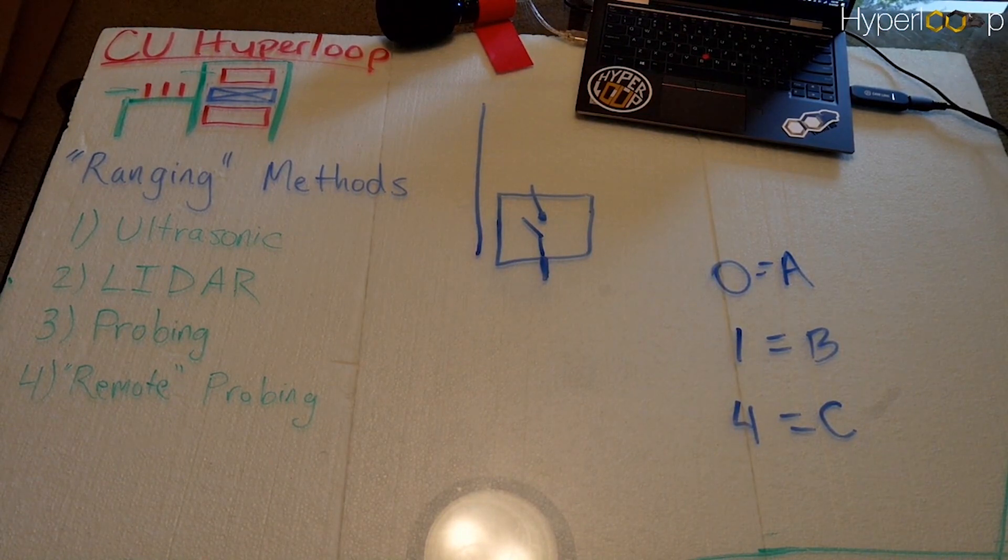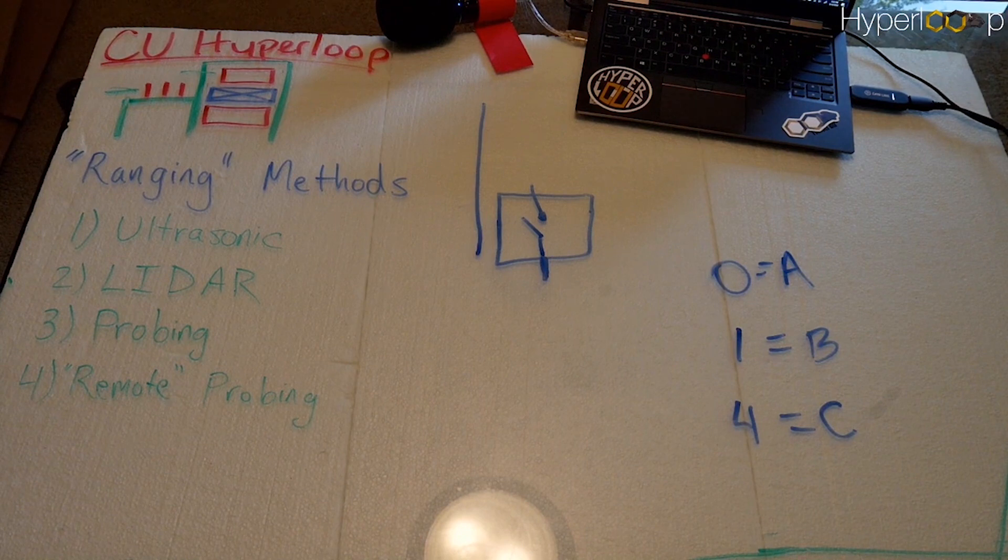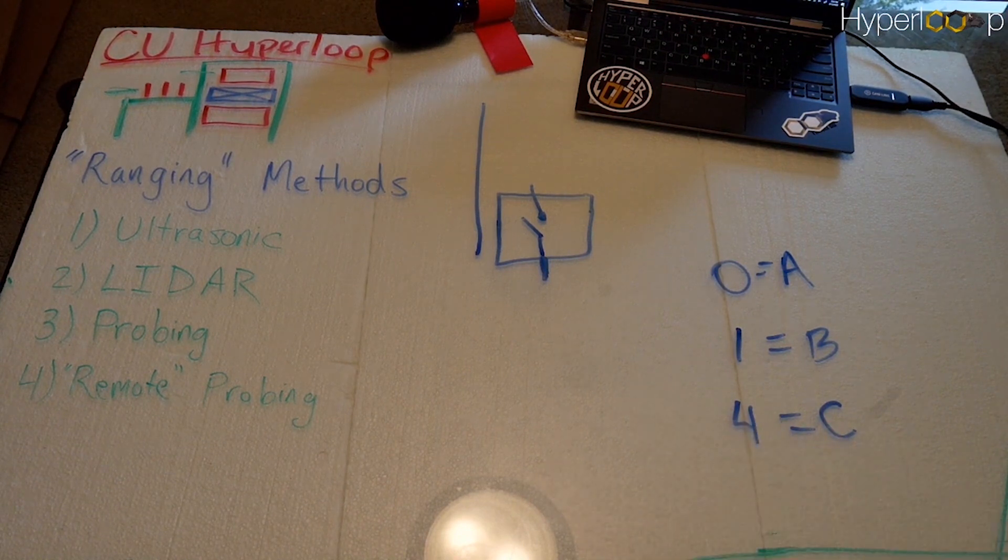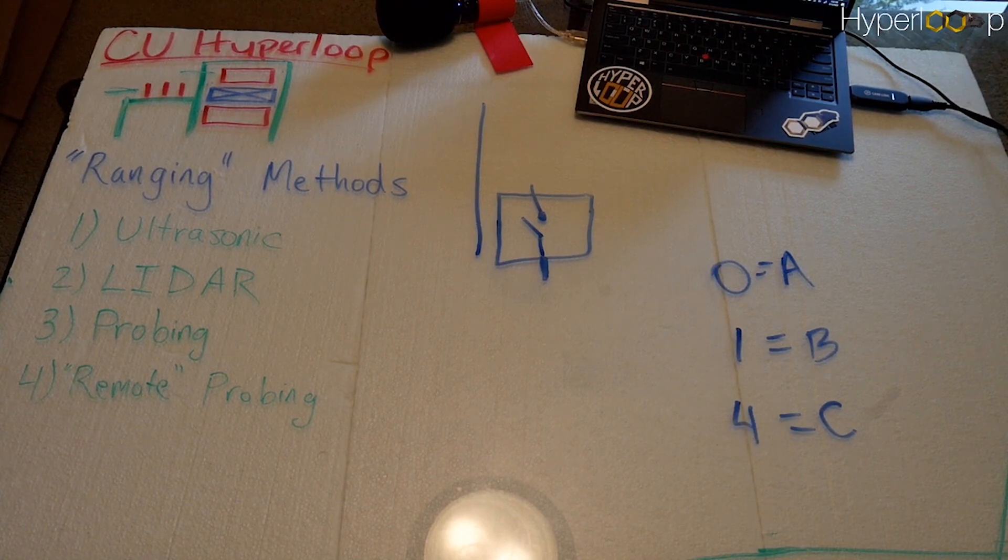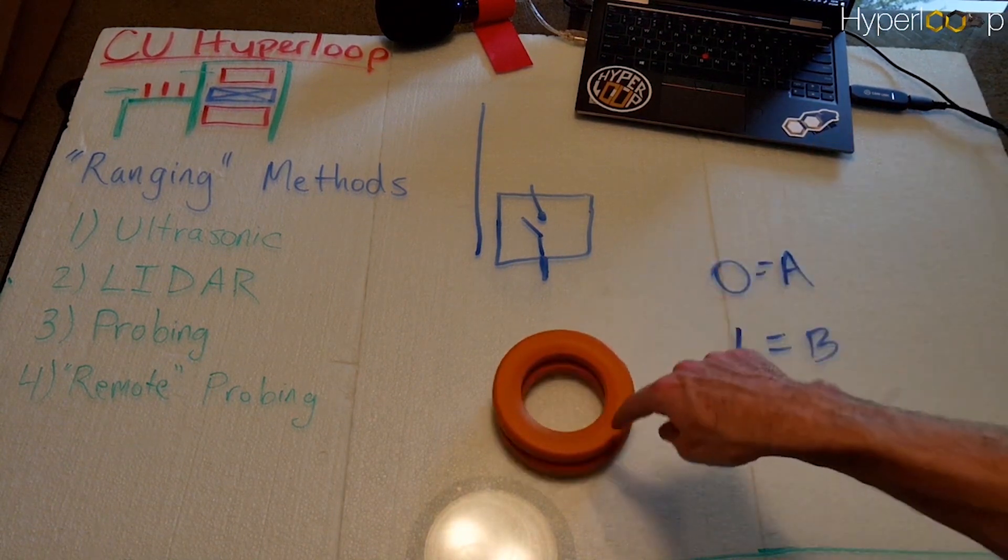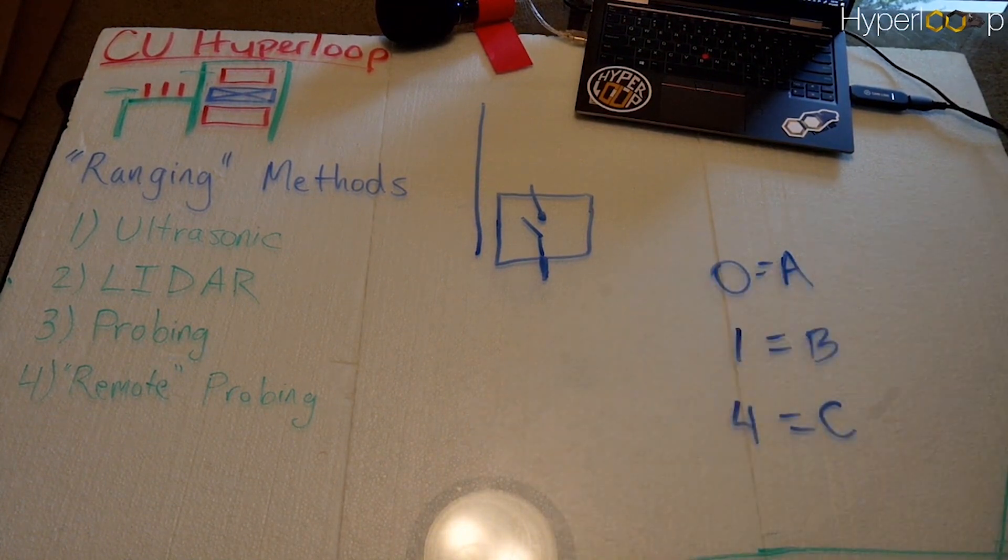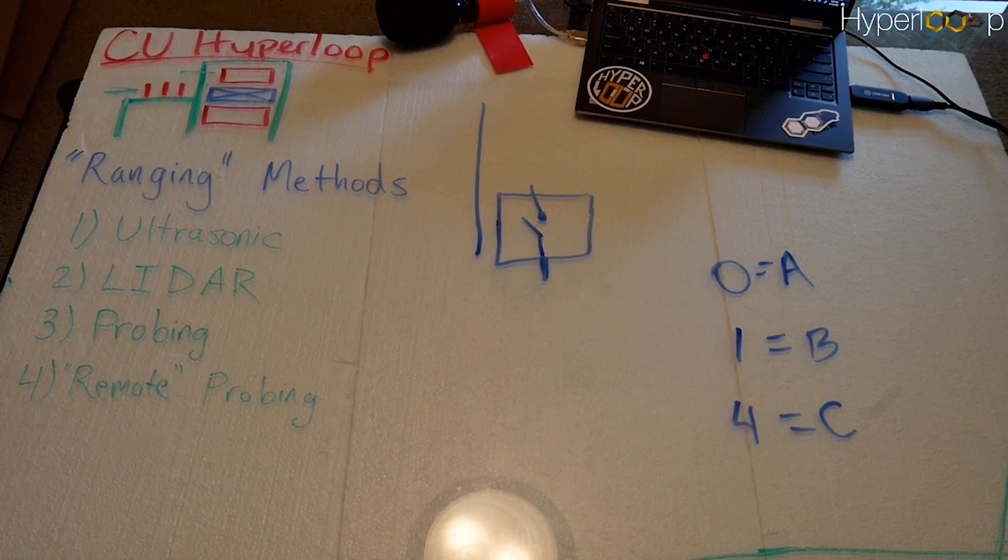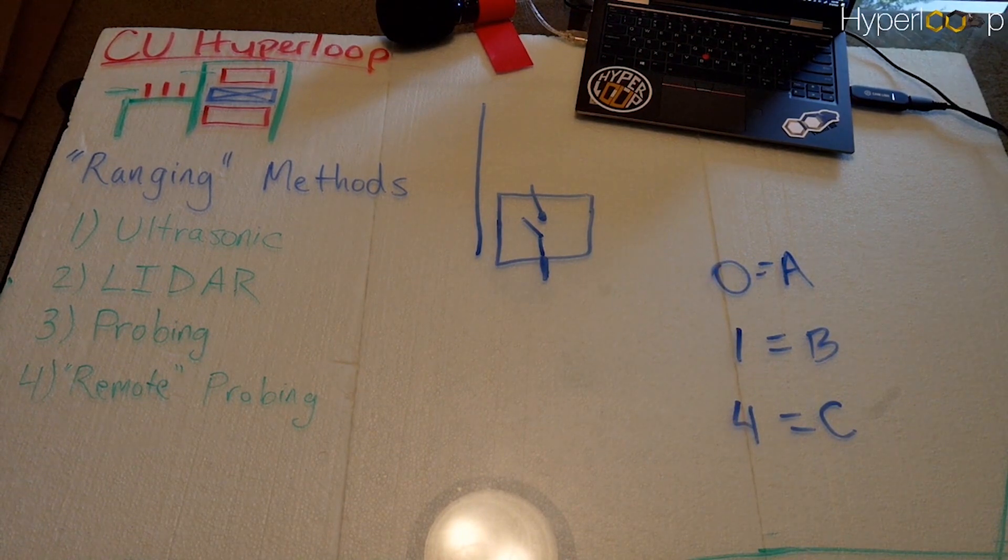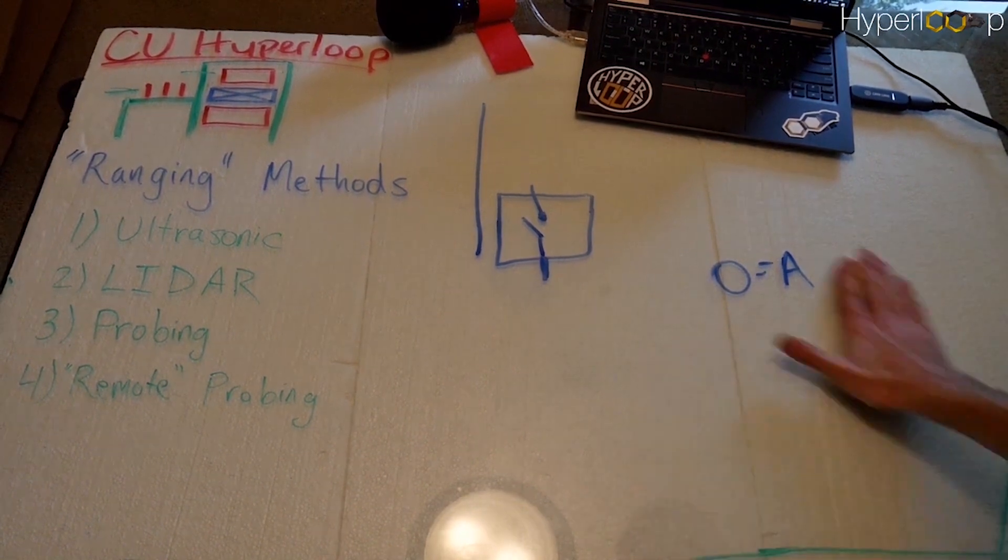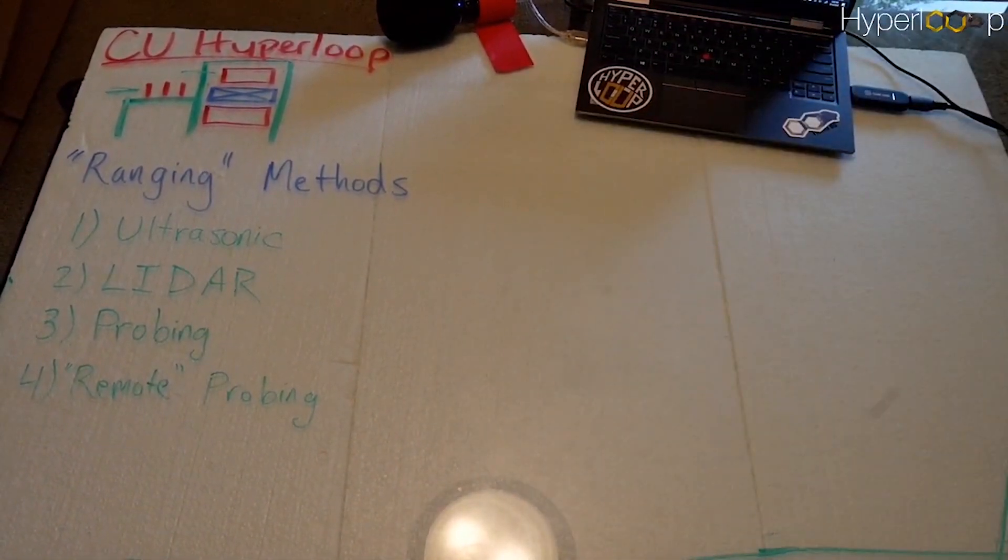But we wanted to look into another method of, quote-unquote, ranging. This is more sort of pseudo-ranging because we're not really getting a range to things necessarily. We're kind of physically probing the stack of rings. So we have to come into contact with it. That obviously introduces a level of unpredictability, and so what we wanted to do is something that was a little bit more remote, that didn't involve contacting the rings. So we kept looking through our sensors list in our kit, and we found that we had a bunch of color sensors.